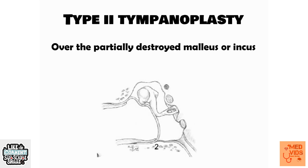In Type 2 tympanoplasty, unlike Type 1 where all ossicles are normal, the malleus is eroded or damaged — either partially or completely destroyed, leaving only the incus and stapes. In this condition, we place the graft over the remaining malleus if it is partially present, or over the incus if the malleus is completely damaged.